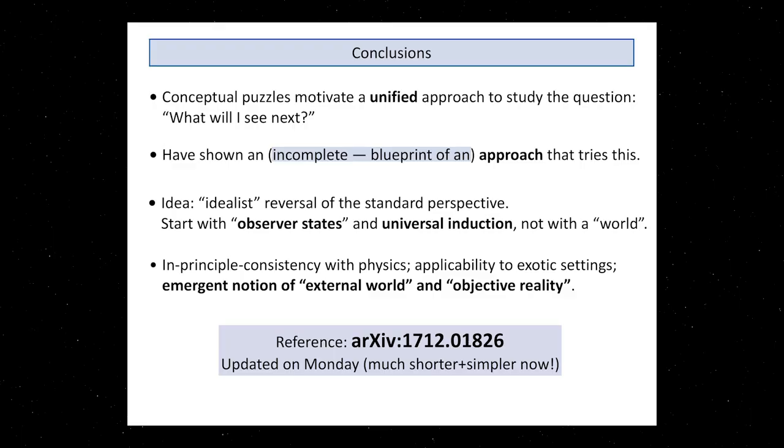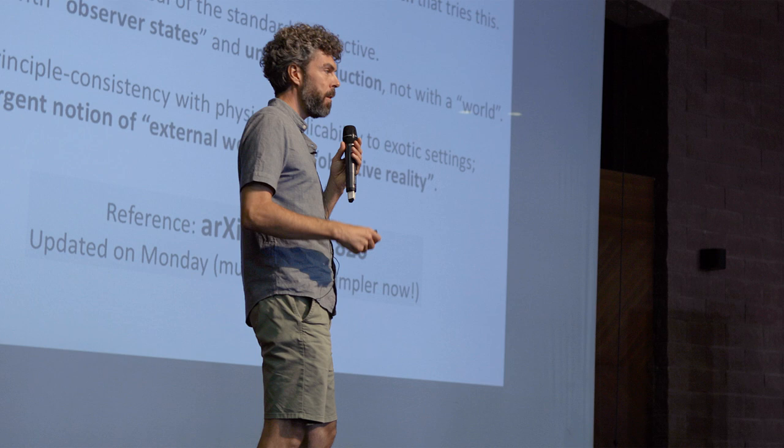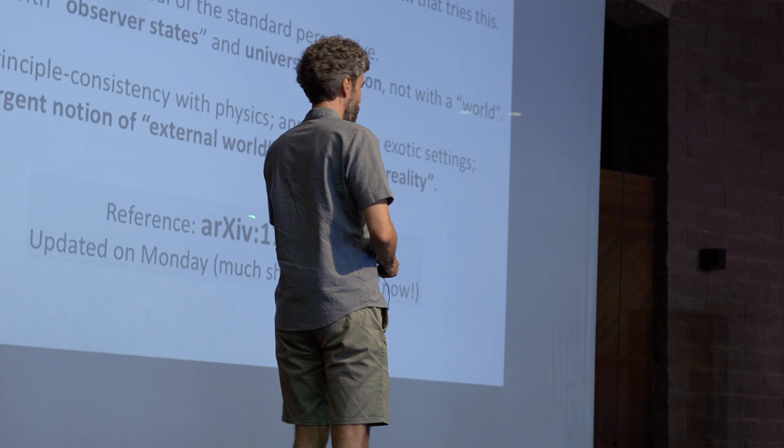Okay, I should stop here. I've tried to show you that there are these conceptual puzzles that motivate some kind of unified approach to this question, what will I see next. This is really incomplete, so if you want, I can tell you what's missing. But it shows you some kind of toy version how you could, in a broadly idealist view, nevertheless have some notion of external world and understand why it's there, and also some notion of objective reality which is nevertheless sometimes just breaking down. I apologize to everybody who tried to read an earlier version of a paper that was 90 pages. It's now much shorter. Thanks very much for your attention.